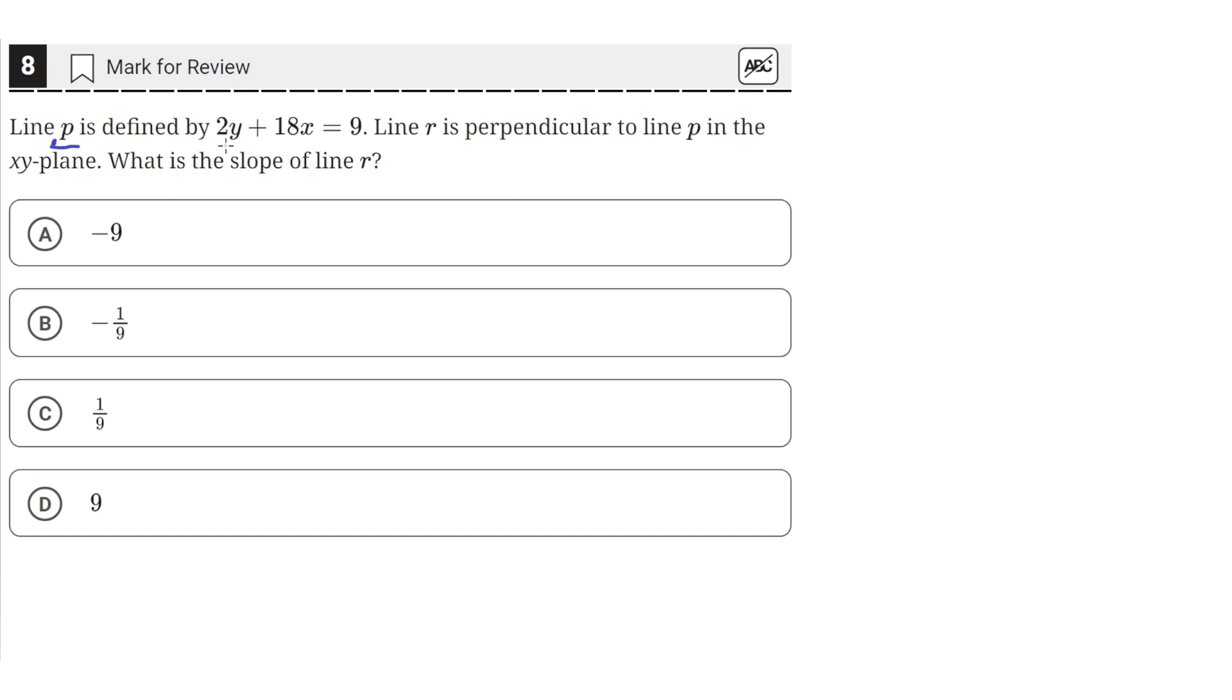Line P is defined by 2y plus 18x equals 9. Line R is perpendicular to line P in the xy-plane. What is the slope of R?